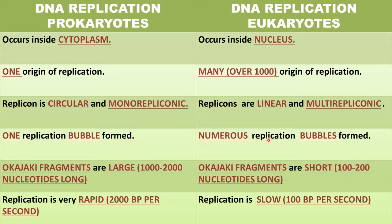One replication bubble forms in prokaryotes, but in eukaryotes many replication bubbles form. Okazaki fragments are large in prokaryotes — 1,000 to 2,000 nucleotides long — but short in eukaryotes — 100 to 200 nucleotides long. Replication is very rapid in prokaryotes at 2,000 base pairs per second, but slow in eukaryotes at 100 base pairs per second.